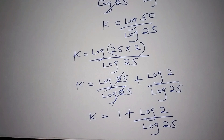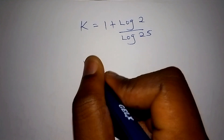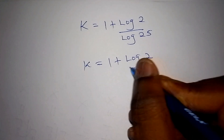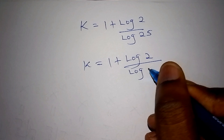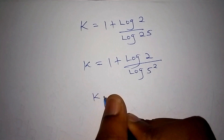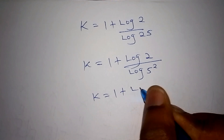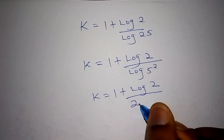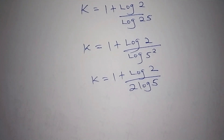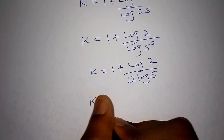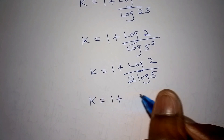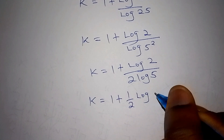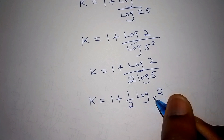We can still rewrite this and say k equals 1 plus log 2 all over log of 5 to the power of 2. And log of 5 squared can be written as 2 log 5. So our final answer becomes k equals 1 plus one-half log 2 to the base of 5.